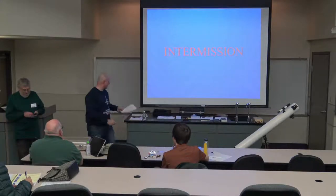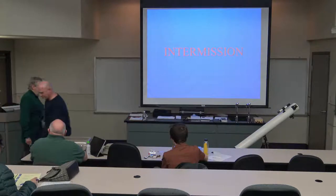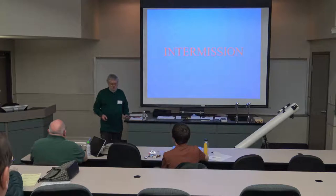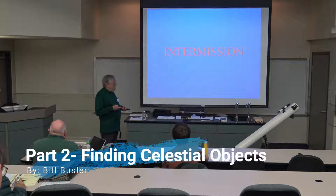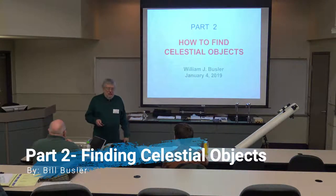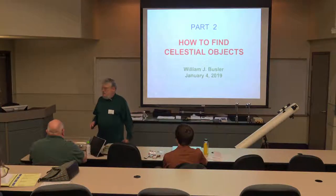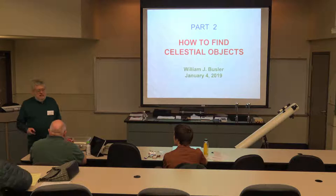Okay, so second half of our program — I'm going to turn it back over to Bill once again. Hey, thank you Jeremy. Minor correction: it's not the second half, it's more like a third compared to the first part. Part two. Finding celestial objects — this is actually a big deal with amateur astronomers, because once you get your telescope out and learn how to set it up and aim it at things, the problem soon arises: what do you aim it at?